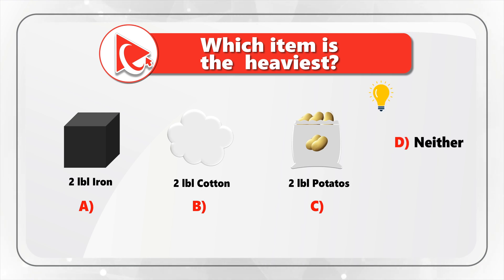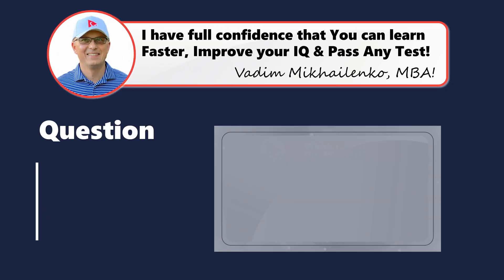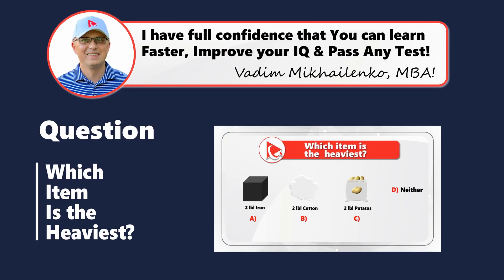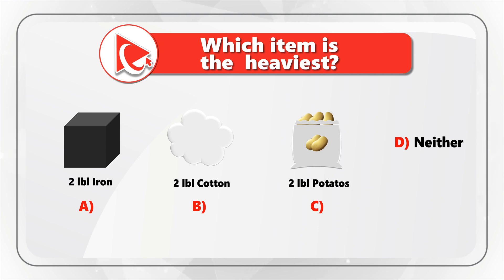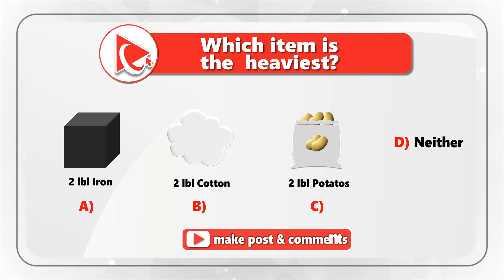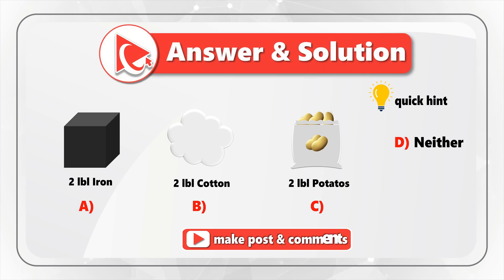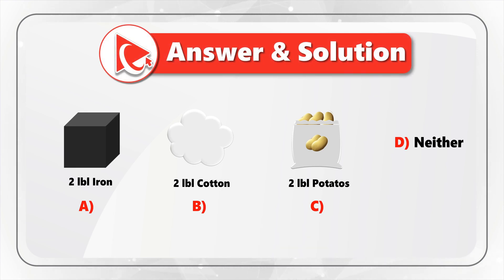Take a close look to see if you can come up with the answer. I am moving forward to share with you my version of the solution. As you might have figured out, all three objects — 2 lb of iron, 2 lb of potatoes, and 2 lb of cotton — will have the same weight.